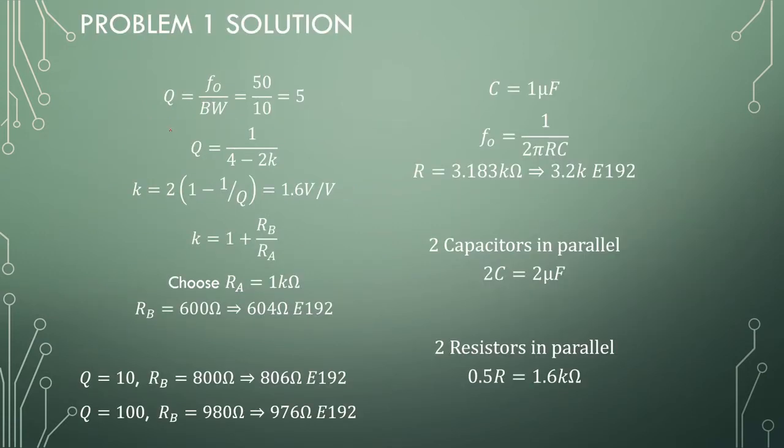The solution would be to first calculate the Q factor. 50 Hz divided by 10 Hz is a Q factor of 5. From that, we can calculate our ratio of resistor B to resistor A, so the gain is 1.6 volts per volt. If we choose the resistor A 1 kOhm, RB should be around 600 Ohms and the closest E192 value is 604 Ohms.